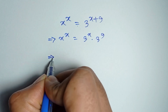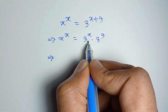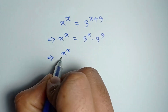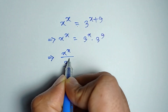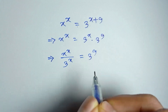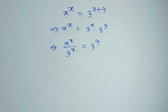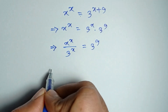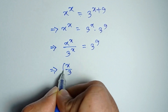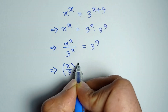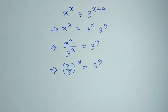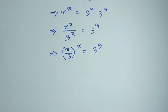If we divide both sides by 3 to the power x, we get x to the power x divided by 3 to the power x is equal to 3 to the power 9, or (x/3) to the power x is equal to 3 to the power 9.